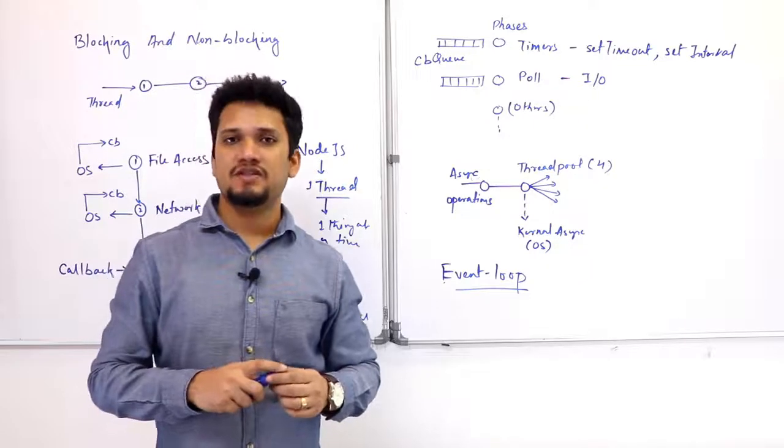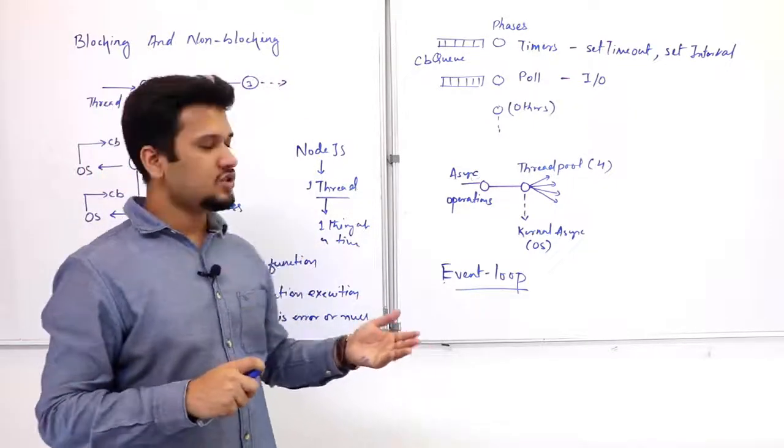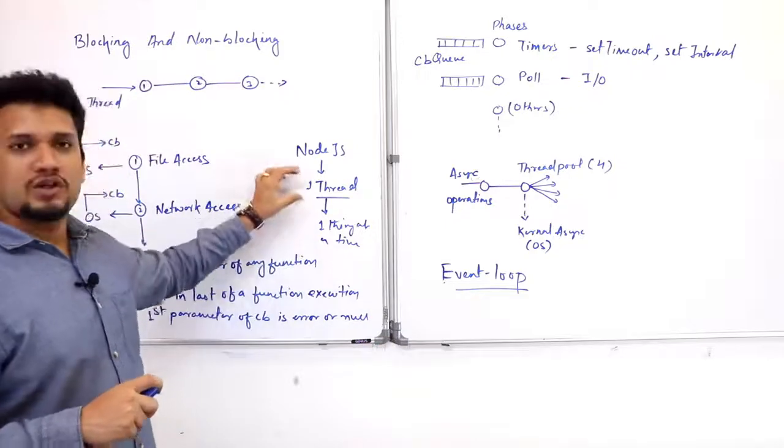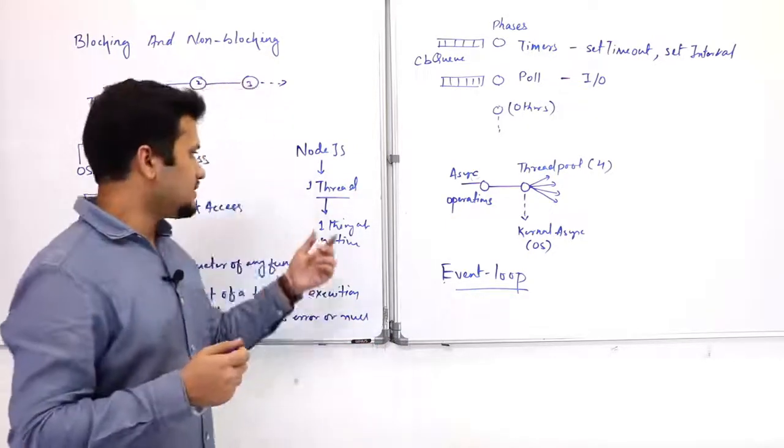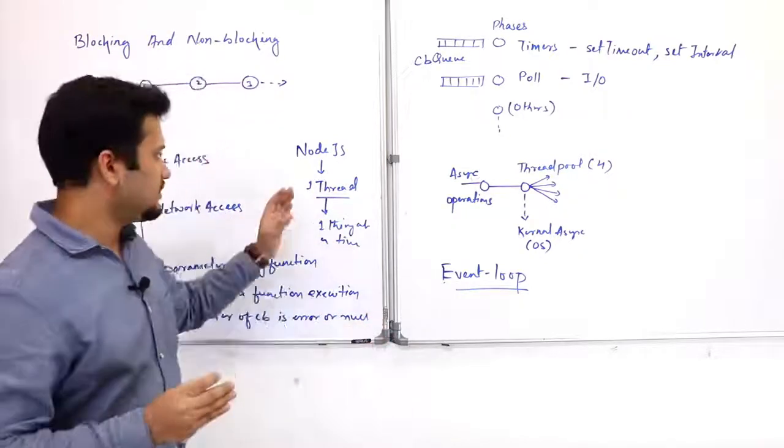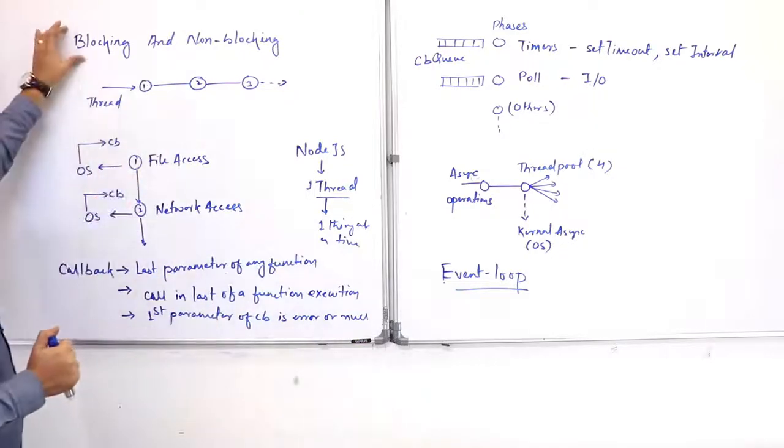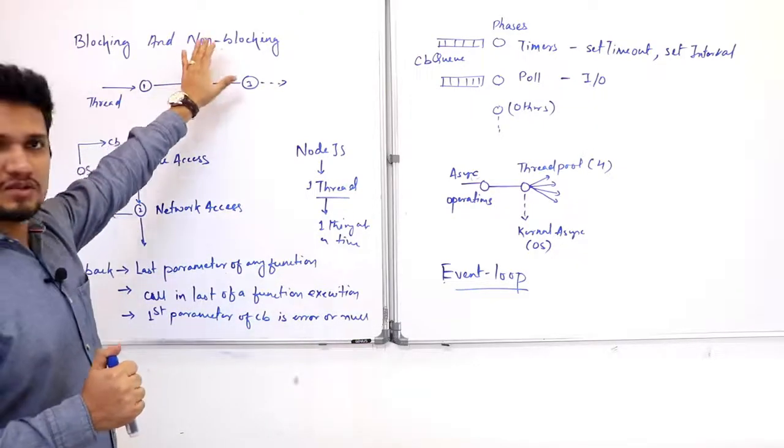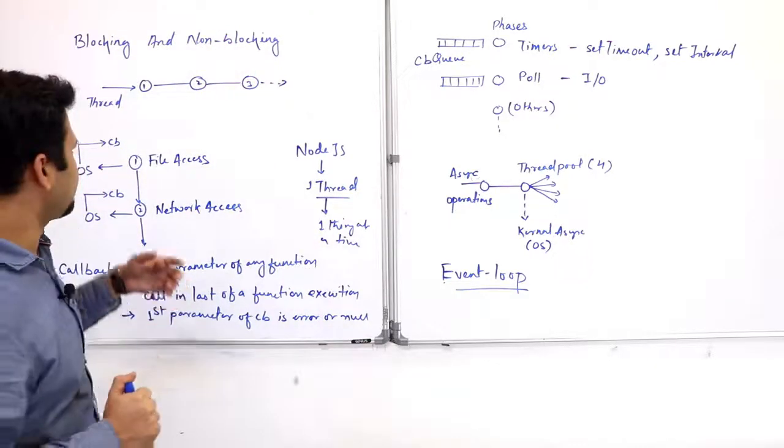Then the wait time will be huge. So a single-threaded system designed in that fashion where one thing is only being served once, first come first serve, then it will not work. So what is blocking and non-blocking? This concept will help to understand how we can optimize a single-threaded system.